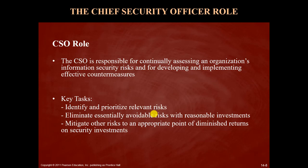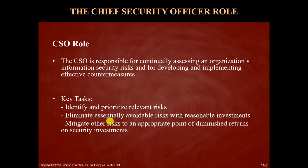To have a person in charge of both technical and managerial solutions to information system security problems, many organizations create the role of the chief security officer, or CSO. This person is responsible for continually assessing an organization's information security risks and for developing and implementing effective countermeasures. Key tasks include identifying and prioritizing relevant risks, eliminating avoidable risks with reasonable investments, and trying to mitigate other risks to an appropriate point of diminishing returns on security investments.